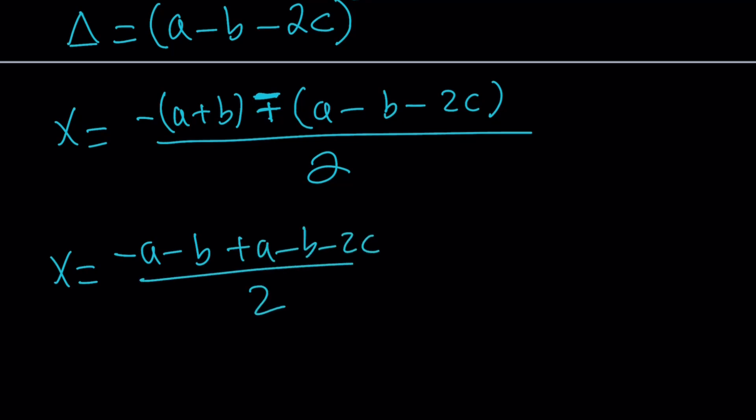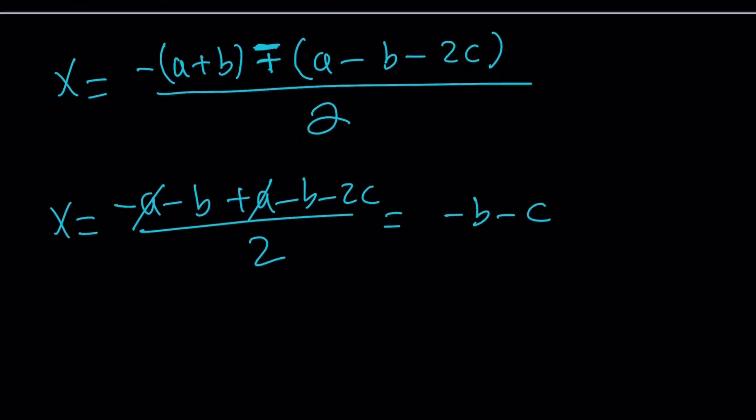This is going to give me—a cancels out—negative 2b, negative 2c, so it's going to be negative b minus c. That's one of the solutions. And then by minus sign, negative a minus b minus a plus b plus 2c, divide by 2. Anything cancels out? Yes, b. 2c minus 2a, so that's going to be c minus a. So those are the solutions, and we're done with the first method.